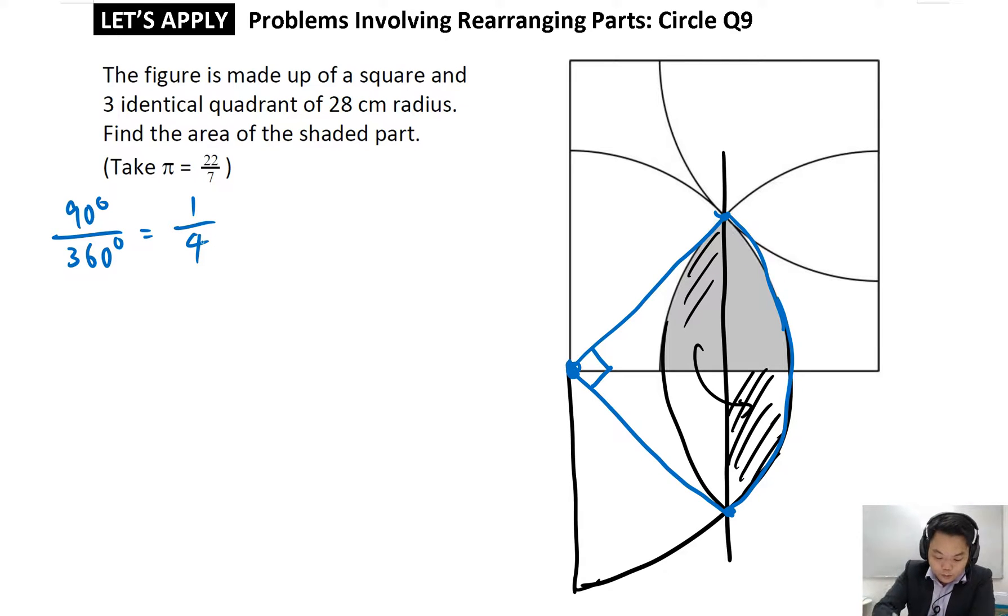Once we are able to see this, the effective area of this quadrant is simply 1 quarter times radius 28 times 28 times pi, which is 22 out of 7. So this would give us 616 cm squared.